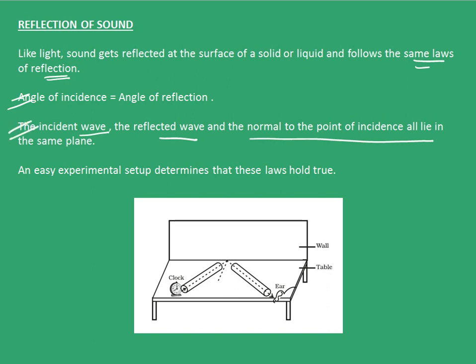There is an easy experimental setup which determines that these laws in fact hold true. As shown in this figure, we need a wall that will reflect the sound on one side of the table, and two tubes which will be used to see that the angle of incidence and angle of reflection are equal to each other. In this experiment, this tube is kept fixed in its position and a clock is placed at the end of this tube.